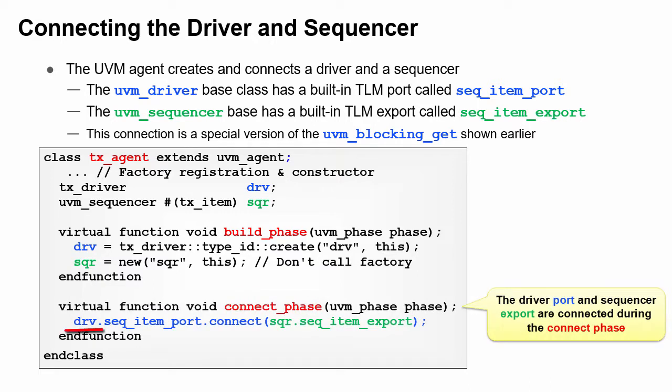In the connect phase, connect the initiator, the driver, to the target, which is the sequencer. Why can't you do this during the build phase? Components are built from the top down, so when the agent's build phase is running, the driver and sequencer have not run their build phase method and are not ready to connect. You need to wait until the next phase, connect. You will learn more about the agent class in upcoming lessons.